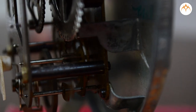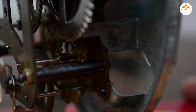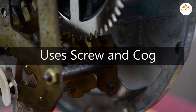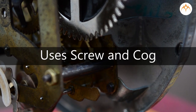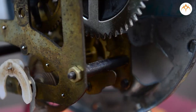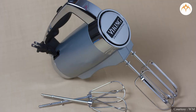Worm gear: screws can be used with another simple machine called a cog. A cog is a wheel that has teeth around the edge. A screw and cog together are called a worm gear. This kitchen hand blender is a complex machine which uses worm gear in its mechanism.